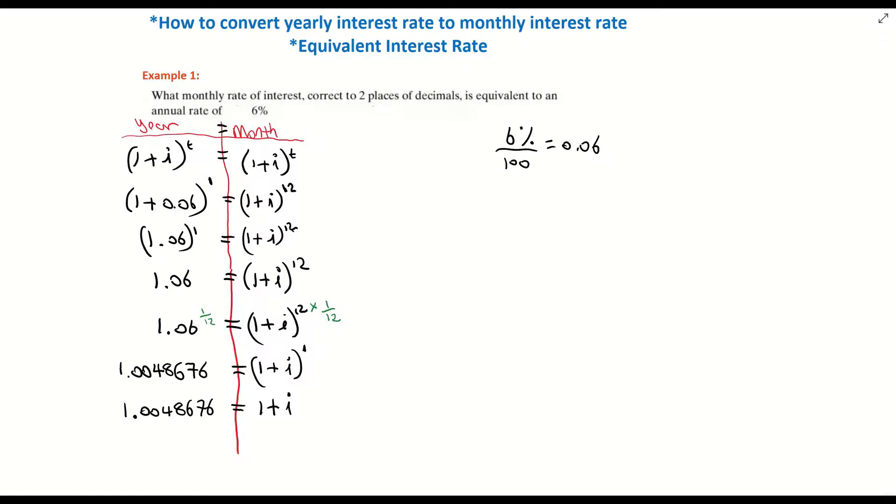We're practically done. All I have to do now is take 1 away from both sides. So it becomes 1.0048676 minus 1. I know it looks like a lot of decimals, but always go to maybe about six or seven decimals because the question wants two decimal places. And don't forget when you multiply by 100 in your answer, that's another two decimal places. So go at least four, if not five or six decimals.